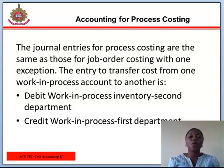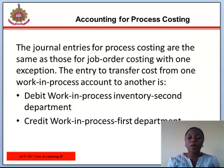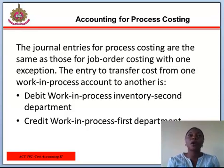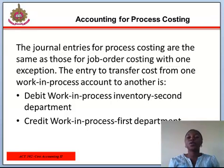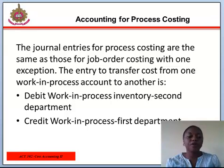There are four steps in accounting for process costing. These include: 1. Summarize the flow of physical units of output. 2. Compute outputs in terms of equivalent units. 3. Summarize total costs to account for and compute equivalent unit cost. 4. Assign total costs to units completed and to units in ending work-in-progress inventory.